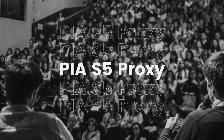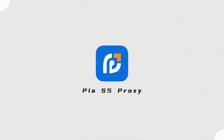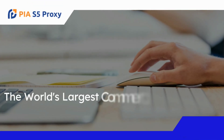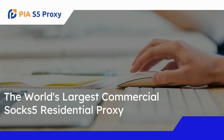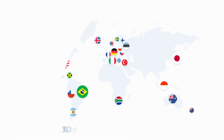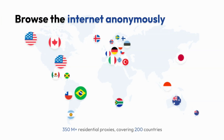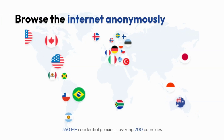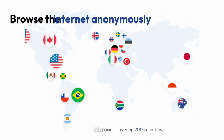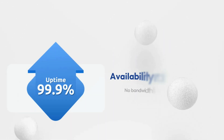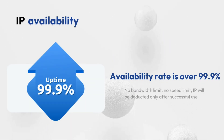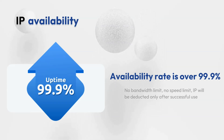PIA S5 Proxy is the world's largest commercial SOCKS5 residential proxy, currently with 350 million residential proxies covering 200 countries. There is no bandwidth limit, no speed limit, and IP will only be deducted after successful use. Availability rate is over 99.9 percent.